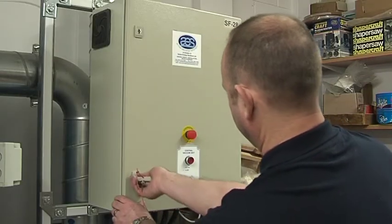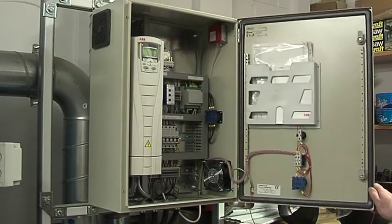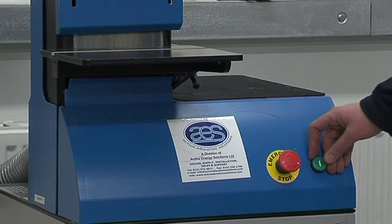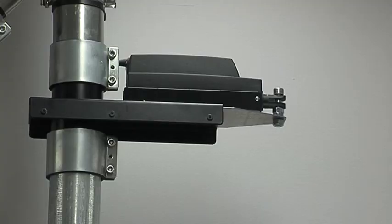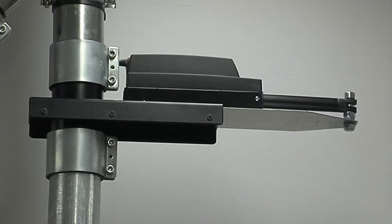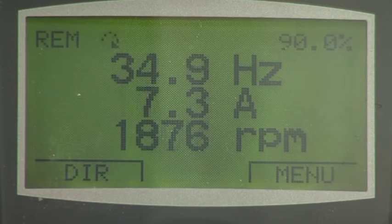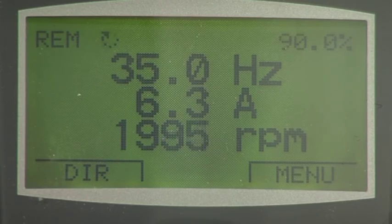The CVAC system comes as standard with a variable speed drive controlling the amount of extraction from each machine. Simply pressing the start button on any workshop machine will open the automatic valve and bring the extraction on. When subsequent machines are started, the variable speed drive will increase the fan speed and the extraction rate.